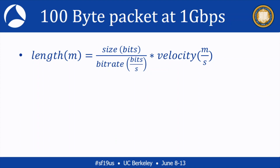We need to know the size of the packet in bytes, the bandwidth of the link — the maximum rate we can send data — and the speed at which signals travel through that link. The simple calculation will tell you what it is. If you look at the units: bits divided by bits per second gives you the time to send that number of bits, and then the velocity is the speed at which the signal propagates through the network link.